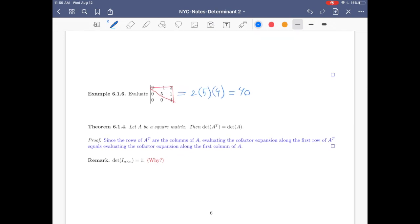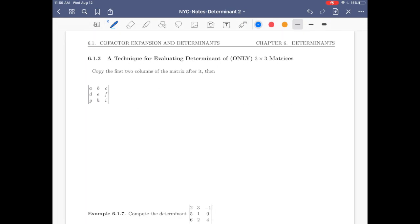Now let's talk about this remark, which says the determinant of the identity matrix is 1. Why? Well, the identity matrix is a diagonal matrix. That's why its determinant is the product of the entries in the main diagonal, which are all equal to 1.